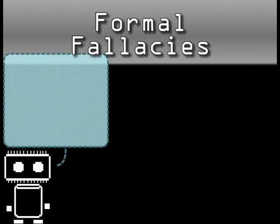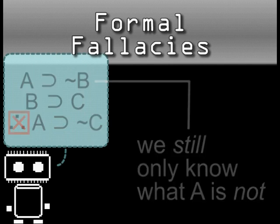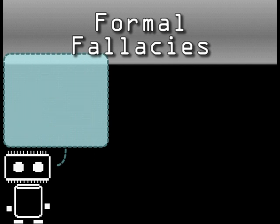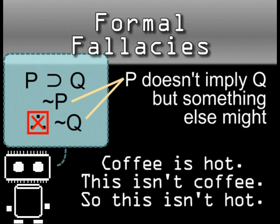This next one runs aground on the same issue as the last. A is not B, so no matter what we say about B, it doesn't apply to A. What's wrong here? I've negated P in this conditional statement, then assumed that Q must also be negated. But perhaps Q is conditioned on something else.